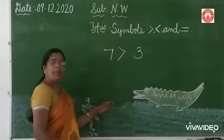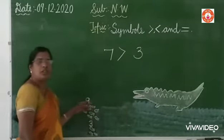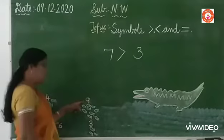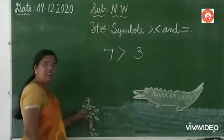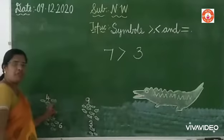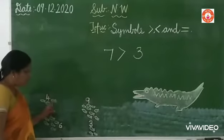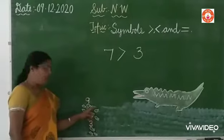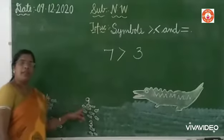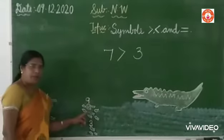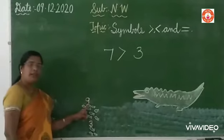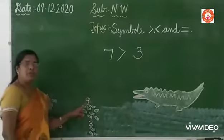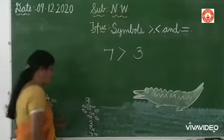Here it is — the crocodile came in the pond, judging the fishes. He saw a group of nine fishes and four fishes. Which group can he eat? The greater number. Nine is the greater, so the crocodile goes towards the nine to eat the fishes.